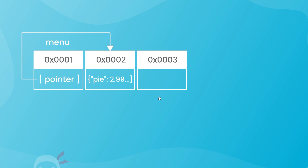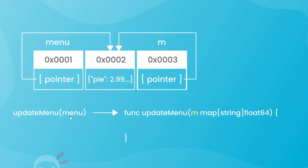When we pass this value as an argument into a function, Go still makes a copy — that part doesn't change — but it's copying the value stored in the wrapper block where the pointer is stored, not the underlying data. The copy contains the same pointer pointing to the same underlying data. So when we change the variable inside the function, Go looks at the copied variable, sees that it points to the other block, and updates the value there — changing the original value.